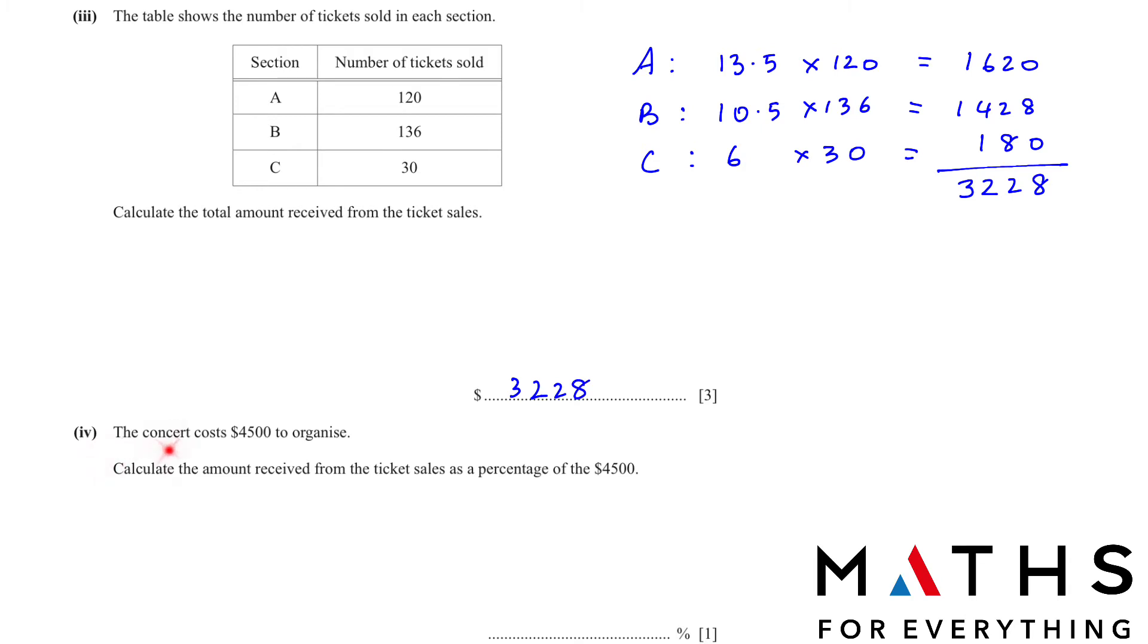Part 4. The concert costs $4,500 to organize. Calculate the amount received from the ticket sales as a percentage of $4,500. So $3,228 divided by 4,500, multiply by 100. Whenever you want to find the percentage, multiply by 100. And we will get the answer 71.7%.